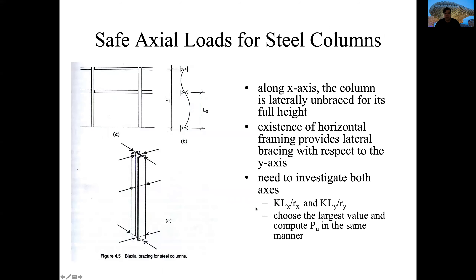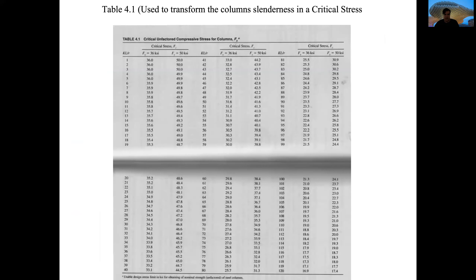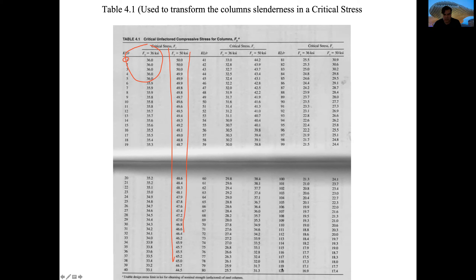We now know how to do this type of problem. It's important to understand that our column has an X-axis and a Y-axis, and the I-beam will have different behavior depending on which direction it's loaded. Normally we calculate both radii but work only with the smaller one, and that depends on the bracing the column will have. The table we use in tests allows us to transform KL/R into critical stress, with two columns — one for A36 steel and one for A50.